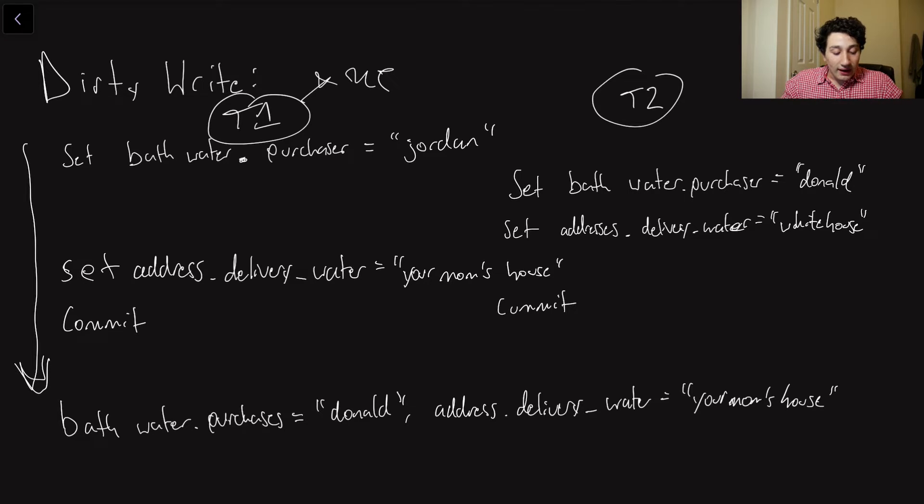we see that the purchases row has Donald set as the value. So this one wins. And then as far as the delivery water goes, because Donald was after Jordan, as far as the delivery water goes, your mom's house wins over the White House.